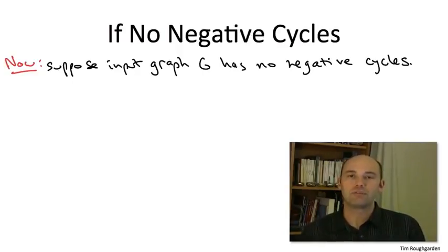Why? Well, suppose there's no negative cycles, fix the destination V. Show me a path that has at least N edges. If it has at least N edges, then it visits at least N plus one vertices.